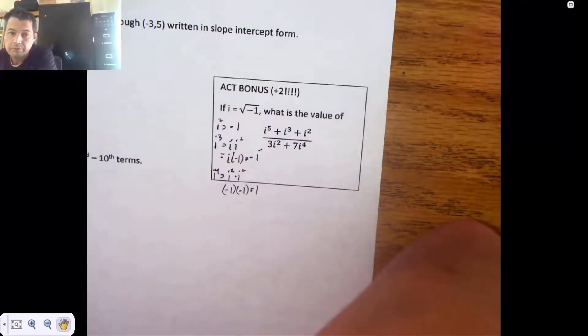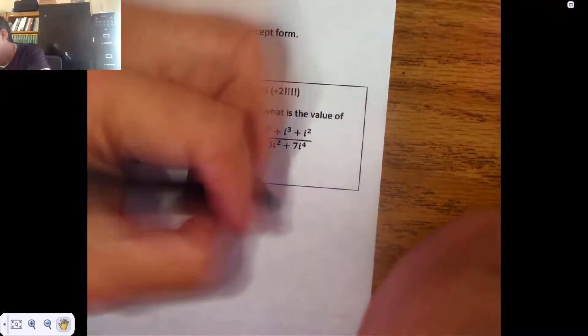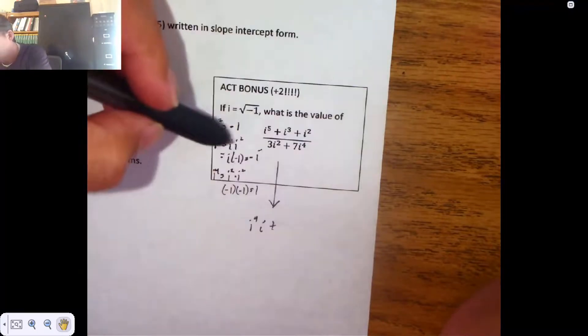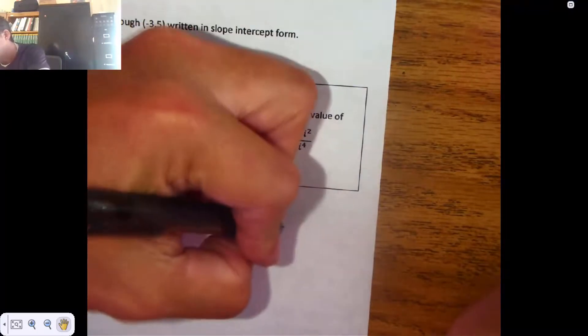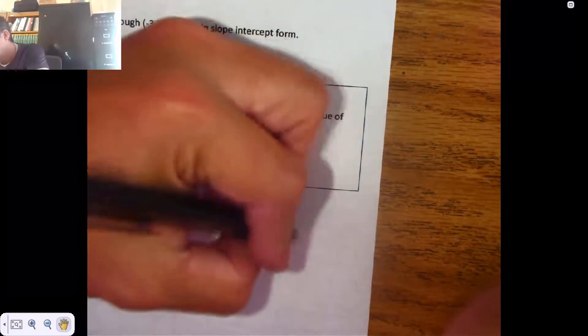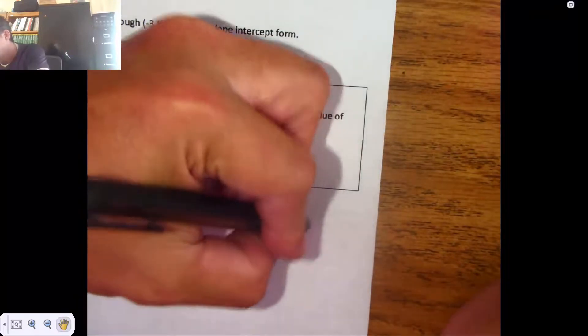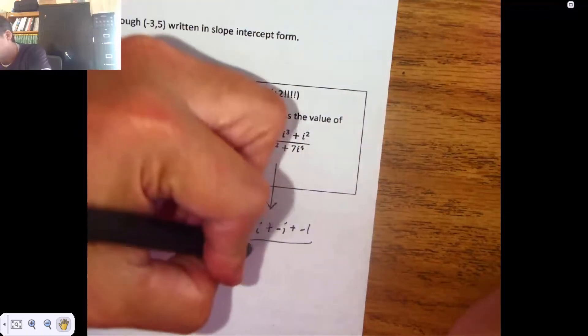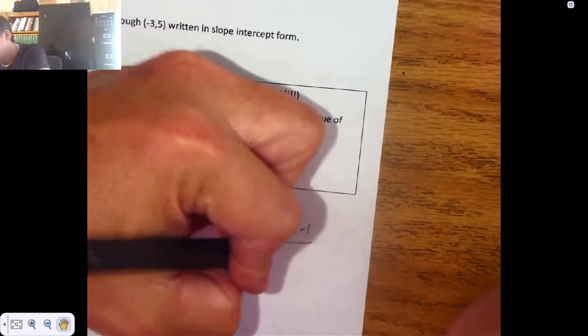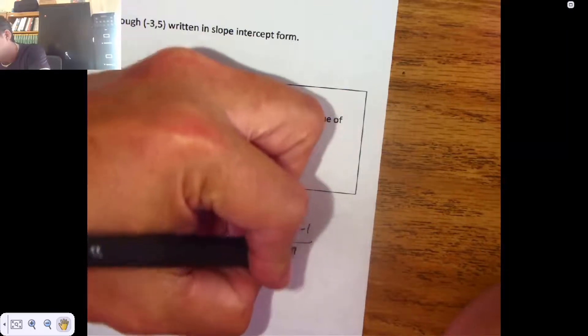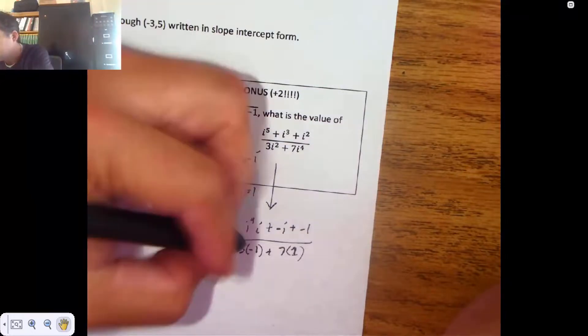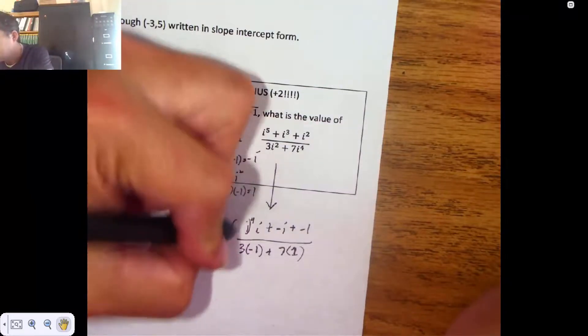I through I to the fourth. So here's I to the fifth. I to the fifth is I to the fourth I, plus I cubed, which is known to be negative I, plus I squared, which is known to be negative one. Three I squared, I squared is known to be negative one. Seven I to the fourth, I to the fourth is known to be one. Moving on in my life, I know I to the fourth is one. So I'm just going to replace that with a one.